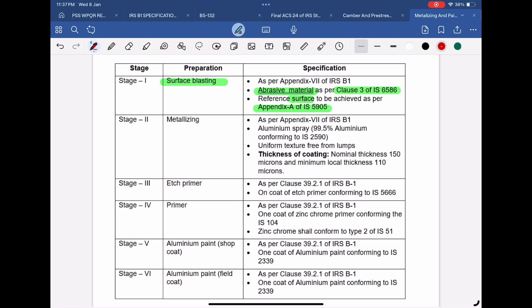IS 5905 is code for sprayed aluminum and zinc coatings on iron and steel. Stage 2 is for aluminum metallizing. The chemical composition of aluminum to be sprayed shall be 99.5% aluminum conforming to IS 2590. IS 2590 is code for primary aluminum ingots for re-melting for general engineering purposes. The nominal thickness of coating shall be 150 microns. The minimum local thickness shall be not less than 110 microns.